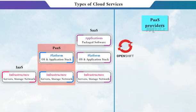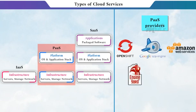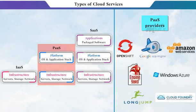The service providers for PaaS are Windows Azure, AWS Elastic Beanstalk, Google App Engine, OpenShift, and many more.